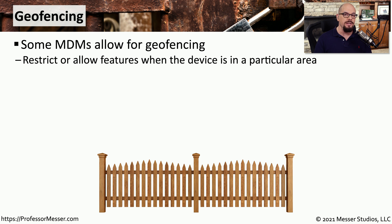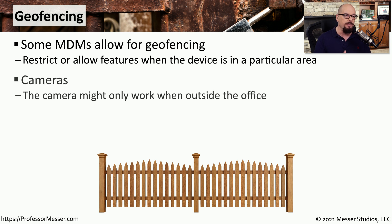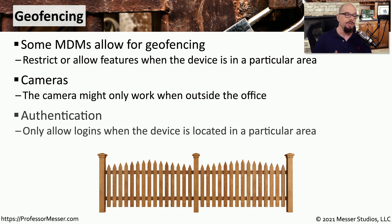Some mobile device managers use geolocation information to enable geofencing. This allows the mobile device to enable or disable certain features depending on the location of the device at any particular moment. For example, you might have your MDM configured to disable the camera when you're inside the office, but re-enable it once you leave. You could also use geofencing as part of authentication — checking where the device is physically located. If the user is in or around the building, authentication continues; if they're authenticating from a different country, that authentication can be automatically denied.